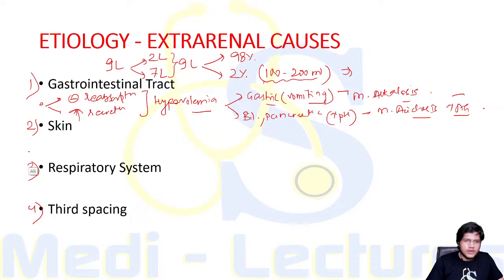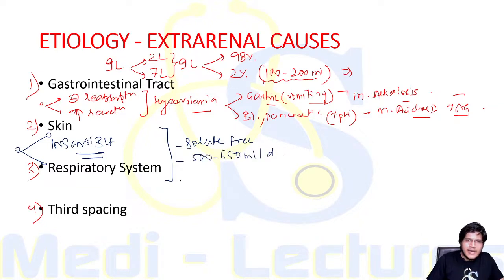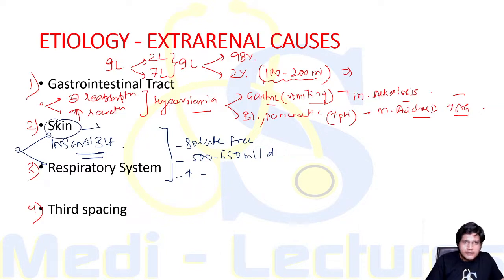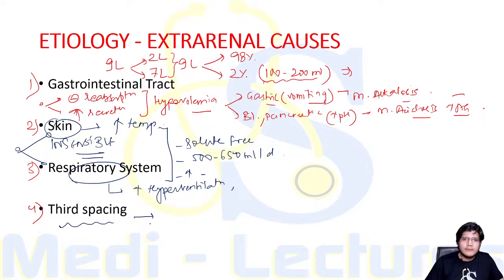Evaporation of water from the skin or respiratory tract is known as insensible water loss. This is usually solute-free water, around 500 to 650 ml per day, and it increases during febrile illness and prolonged heat exposure. Insensible water loss from skin increases with increased ambient temperature, and loss from the respiratory system increases with hyperventilation, also depending on the humidity of the air.